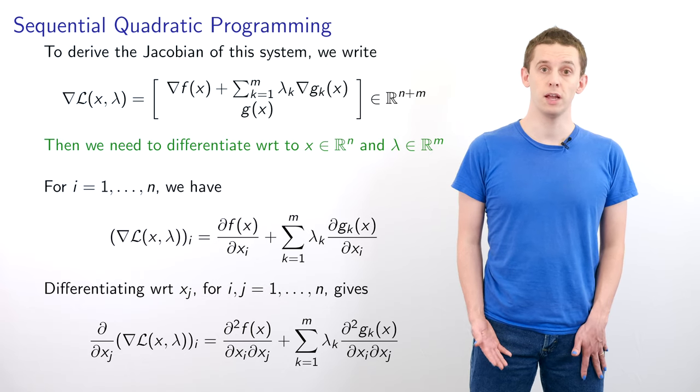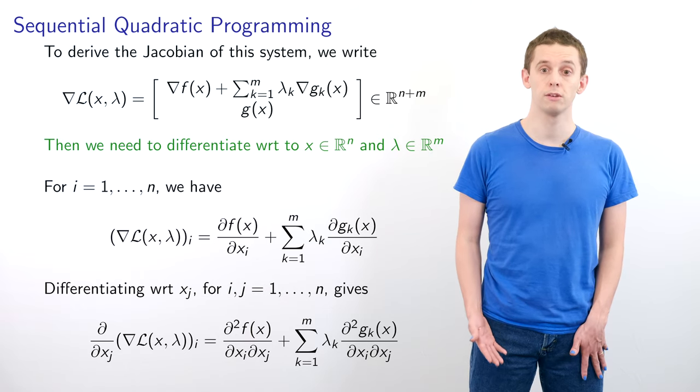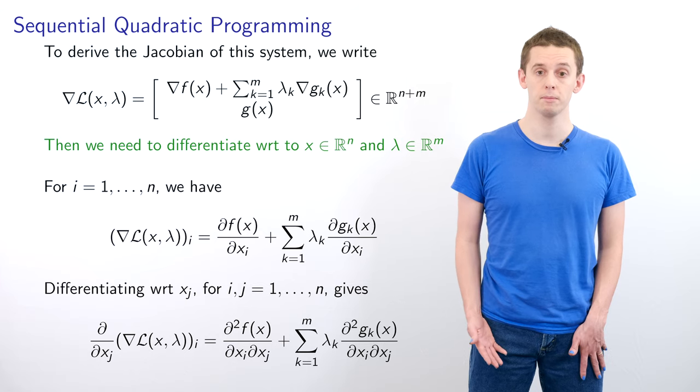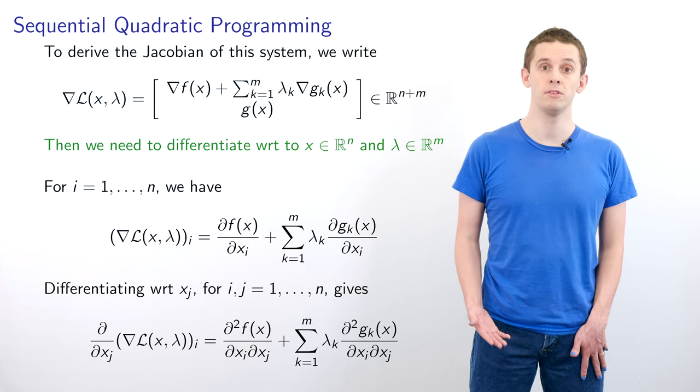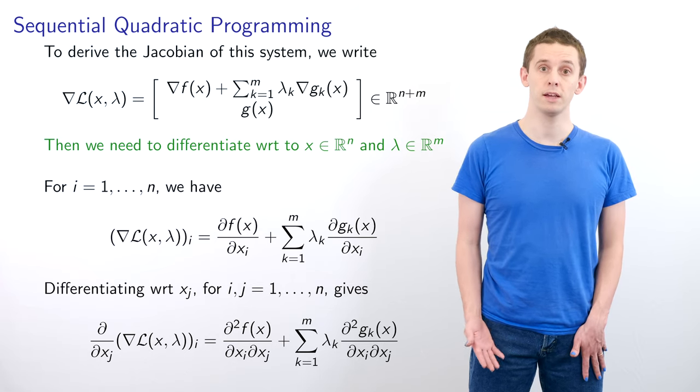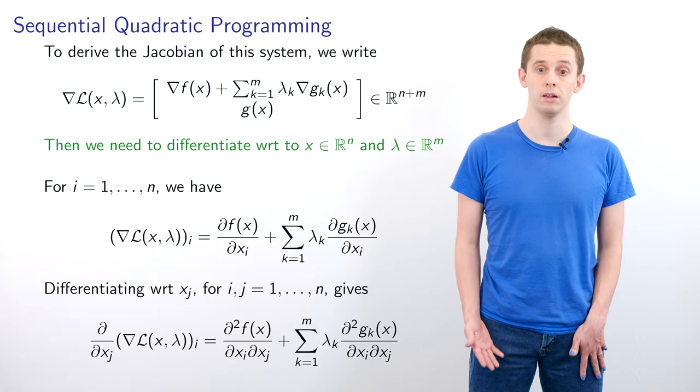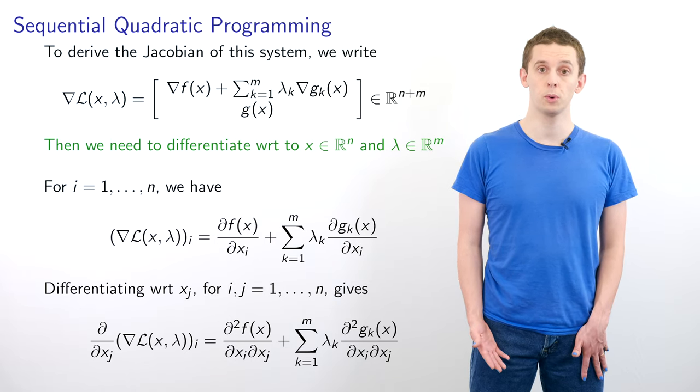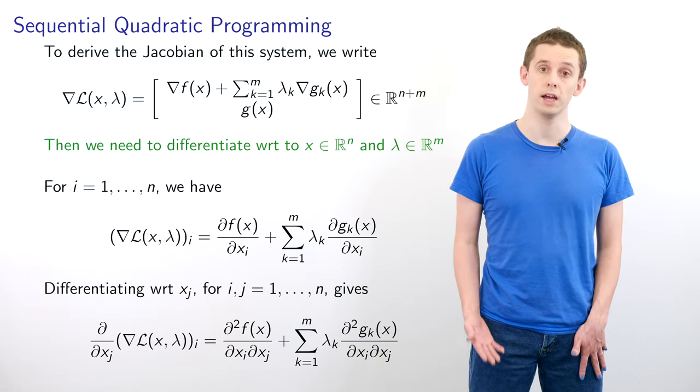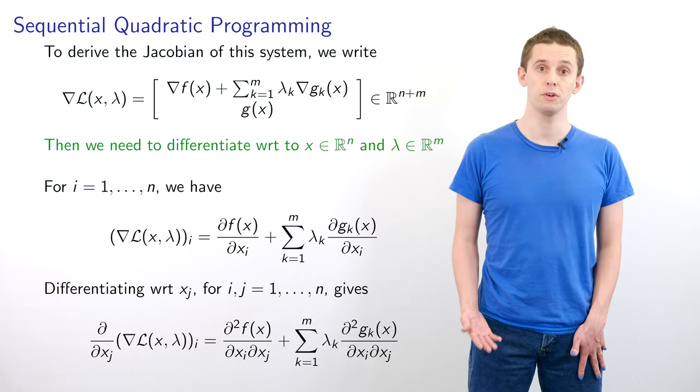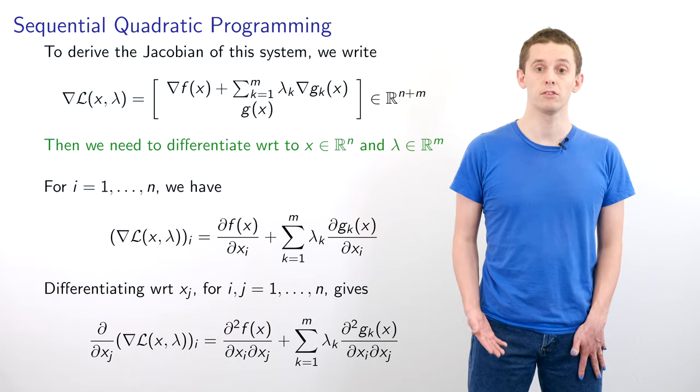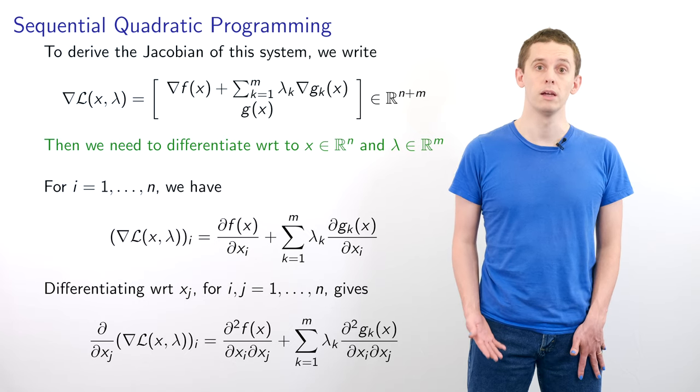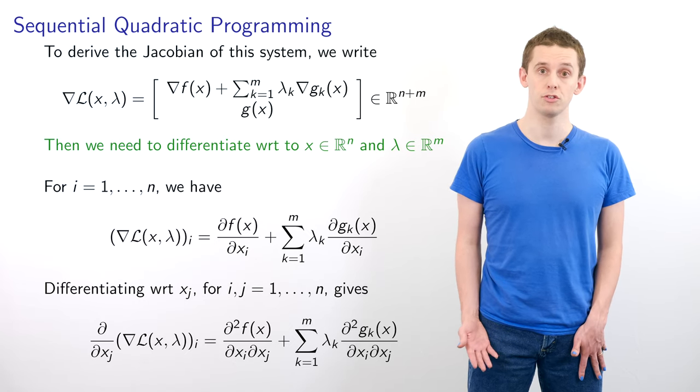If we differentiate this with respect to x_j for j=1 to n, then we obtain that ∂/∂x_j of the i-th component of the gradient of L is equal to ∂²f/∂x_i∂x_j plus the sum from k=1 to m of λ_k times ∂²g_k/∂x_i∂x_j.